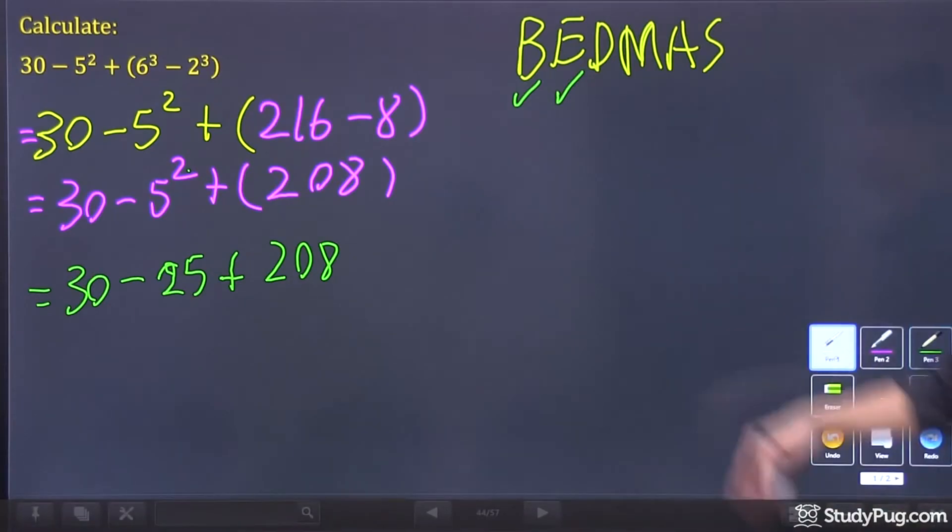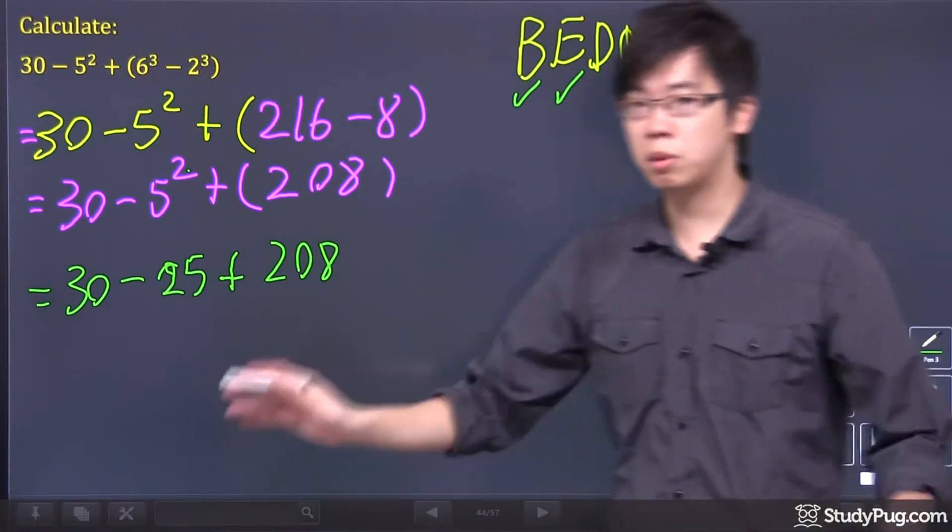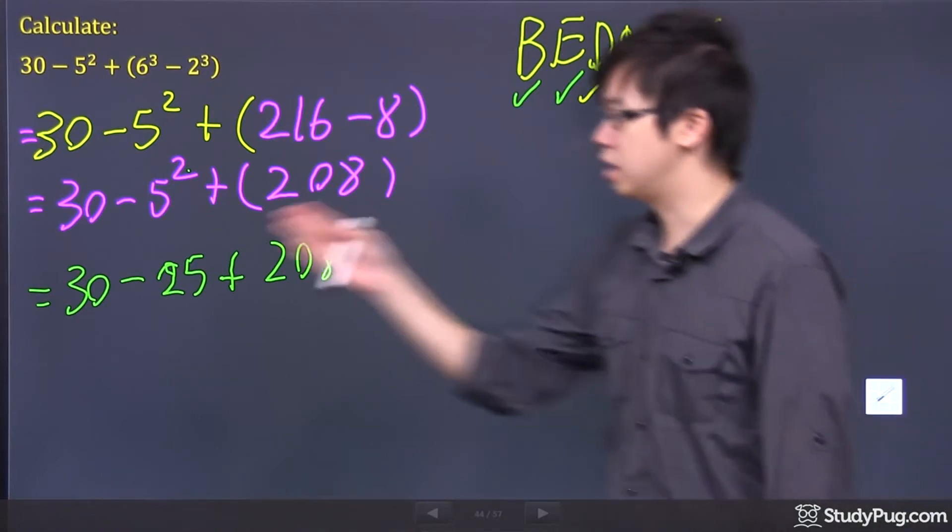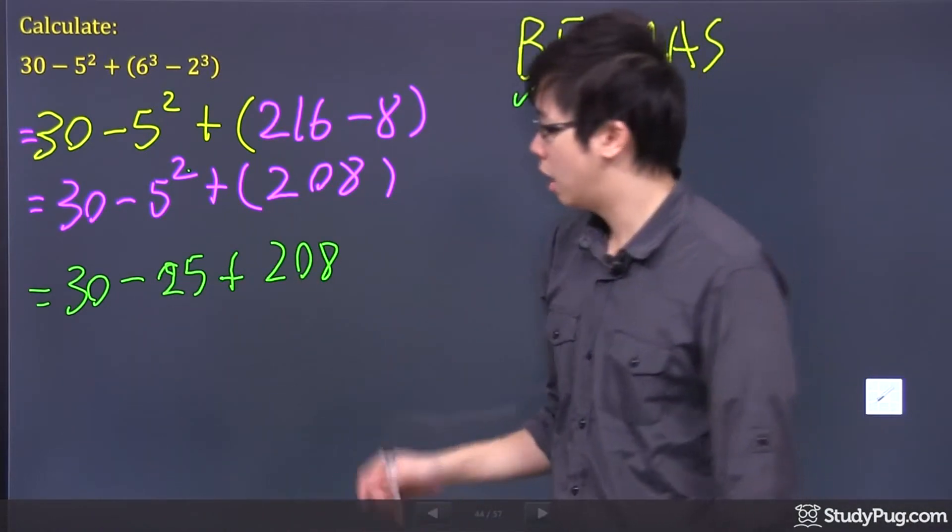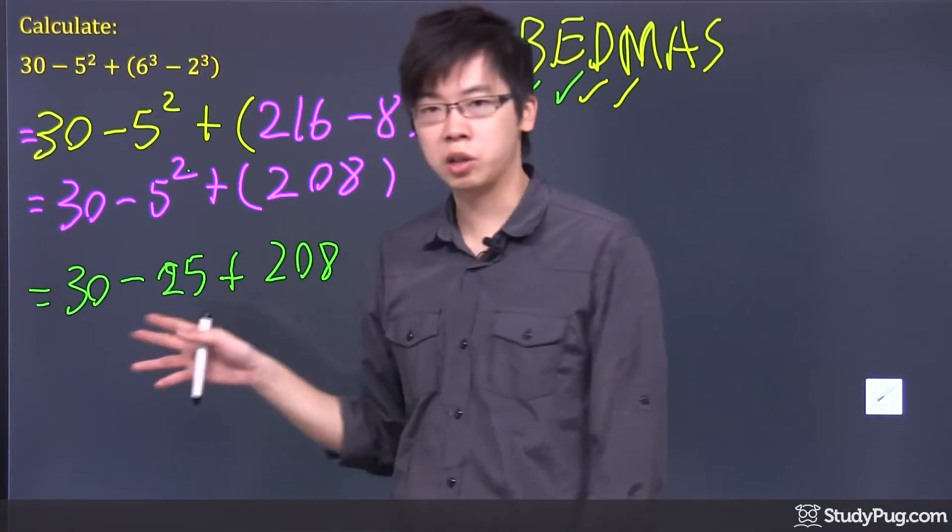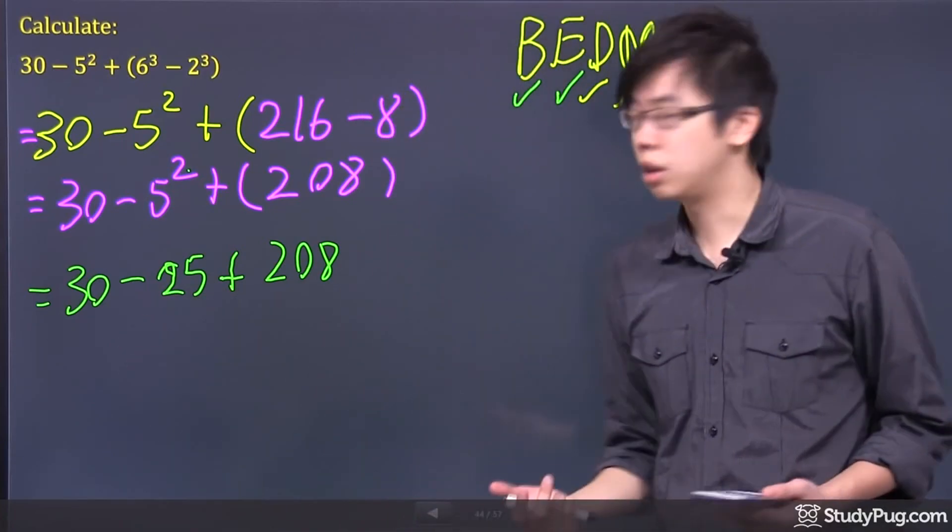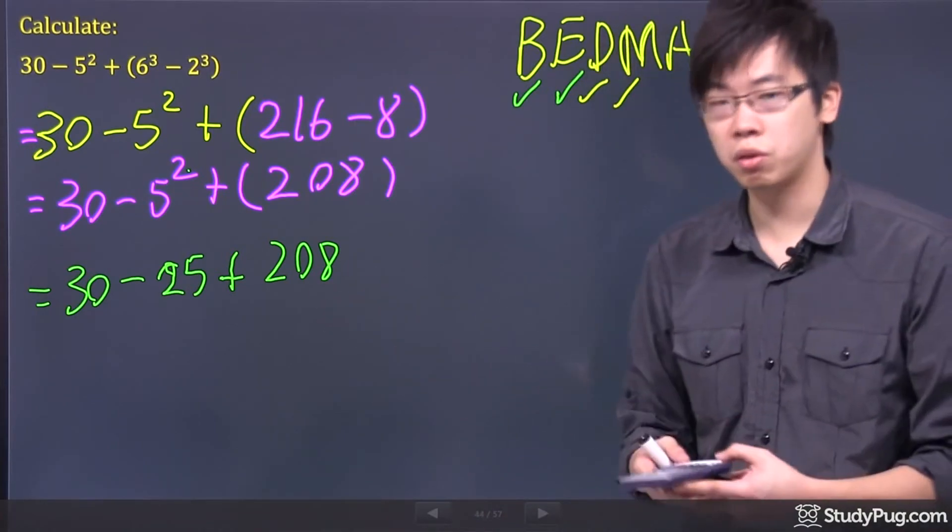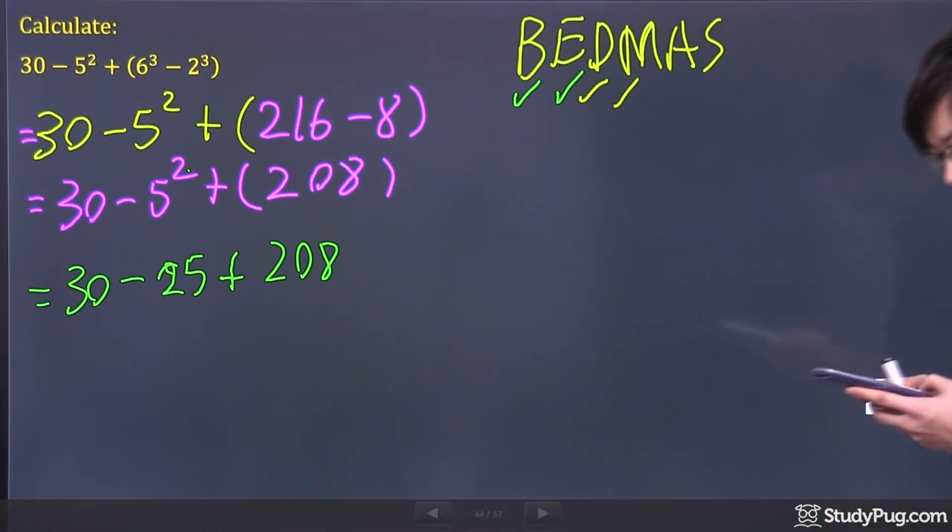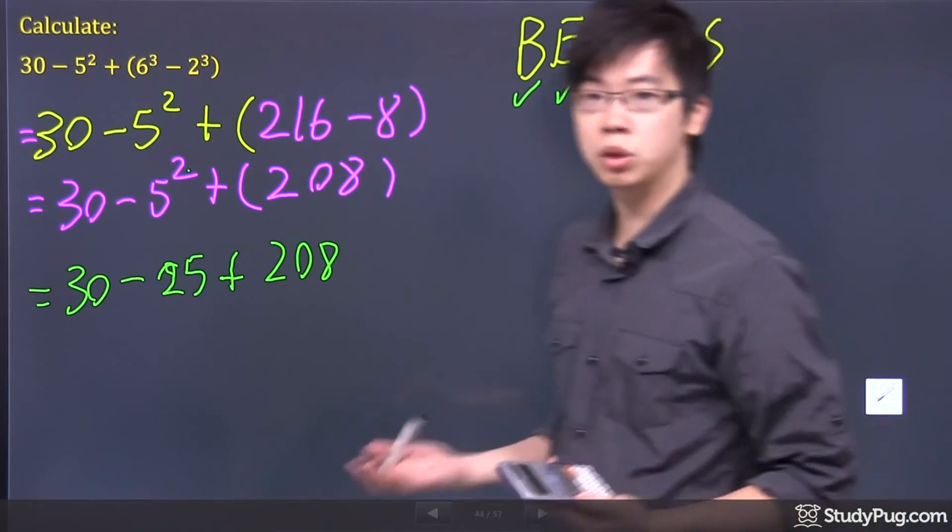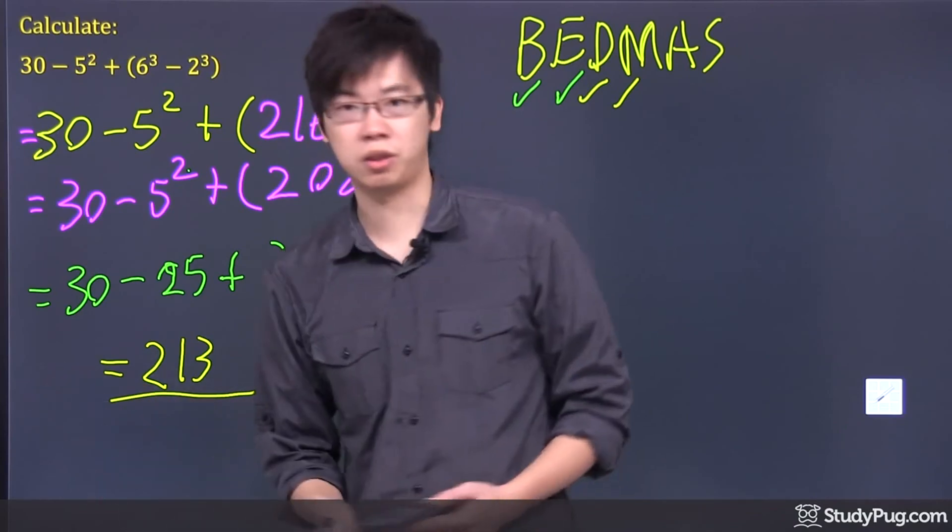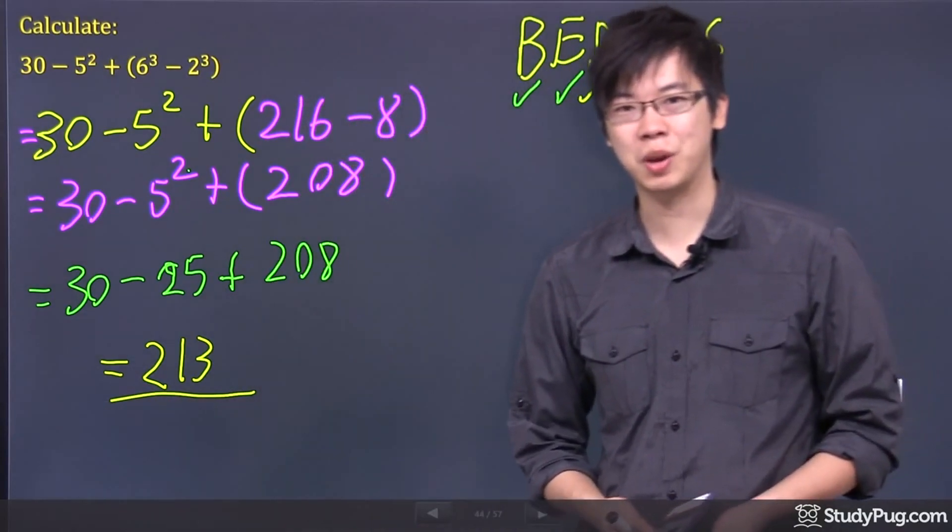So the very last step, once everything's done, there's no more multiplying, no more division. Everything's done. It's just addition and subtraction. Now, as you can see, there's a minus and a plus. So who comes first? The rule is start from left to right. So you just use your calculator. It goes 30 minus 25 plus the 208. You get yourself 213 as your final answer. And that's it for this question. Thanks a lot.